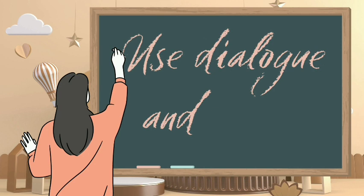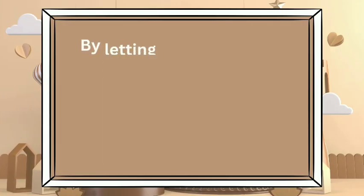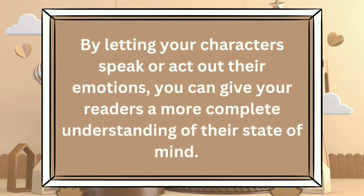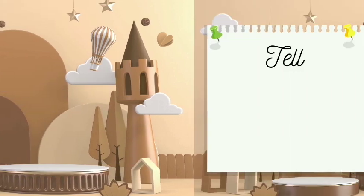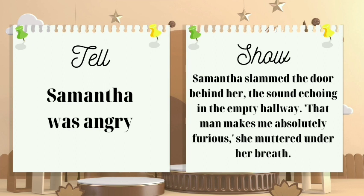Tip 2: Use Dialogue and Action. By letting your characters speak or act out their emotions, you can give your reader a more complete understanding of their state of mind. For example, instead of saying Samantha was angry, we could write: Samantha slammed the door behind her, the sound echoing in the empty hallway. "The man makes me absolutely furious," she muttered under her breath.